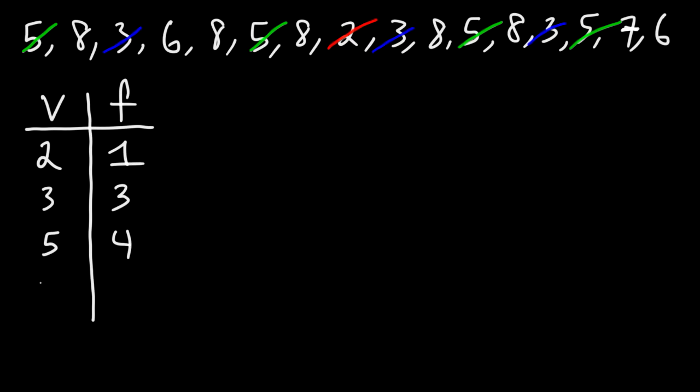The next number is 6, and we have 1, 2 sixes. And it looks like we have 1 seven. And finally, the last number that we have is 8: 1, 2, 3, 4, 5 eights.